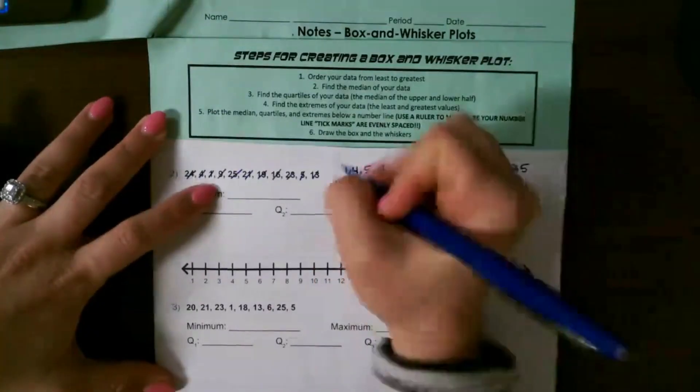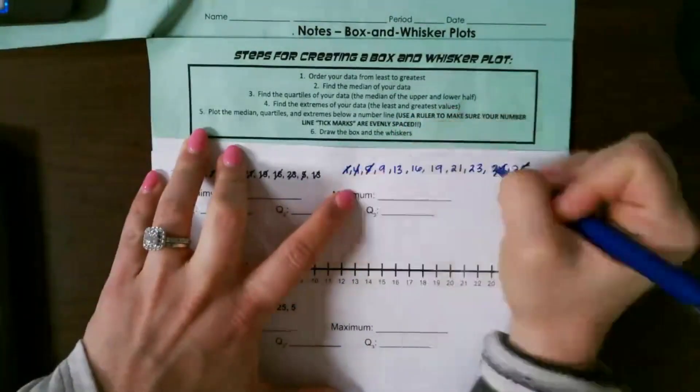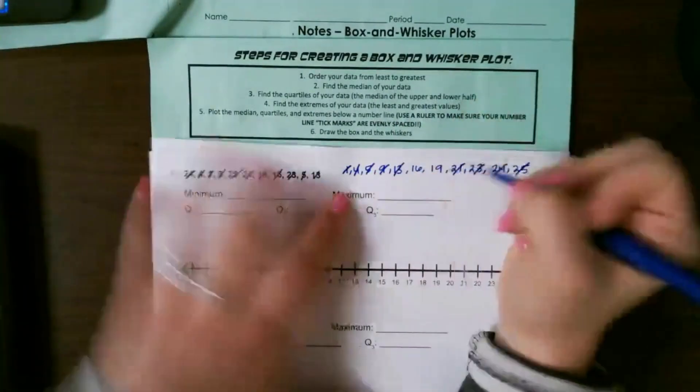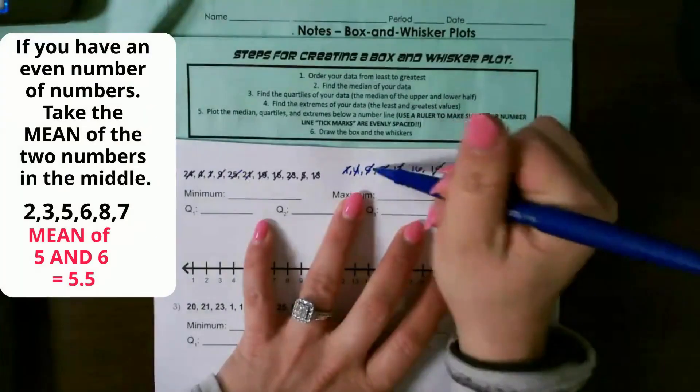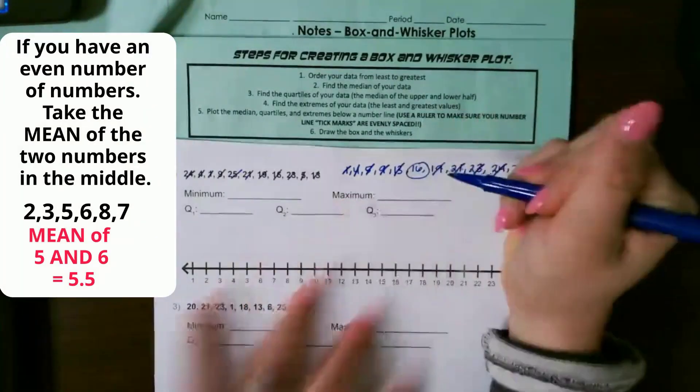Remember that median is the middle. I'm going to go through and find the middle number by crossing out numbers on either side. So I have 1, 2, 3, 4, 5, 1, 2, 3, 4, 5. So 16 is our median.